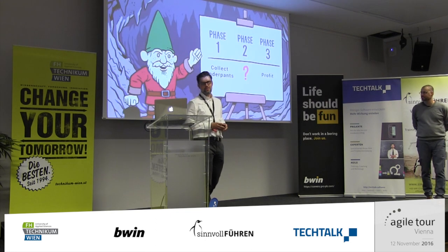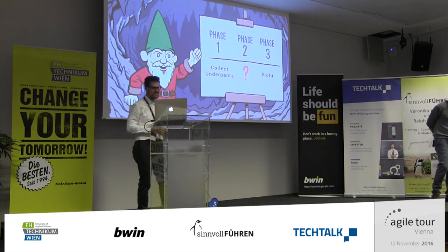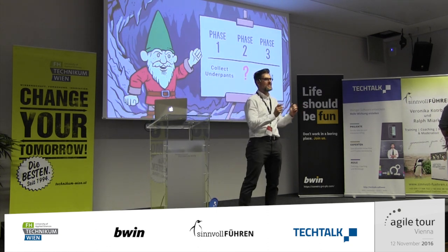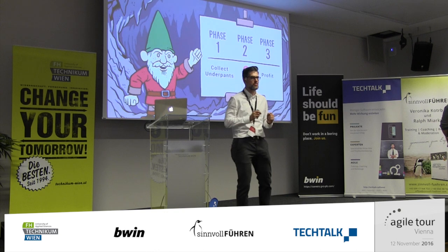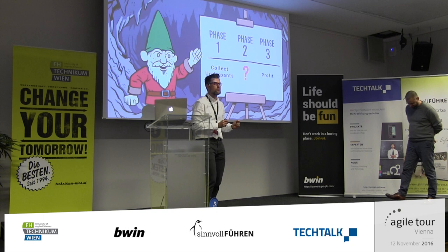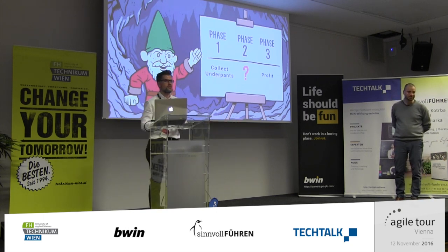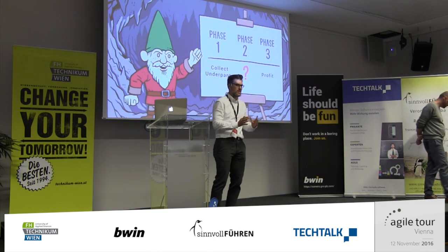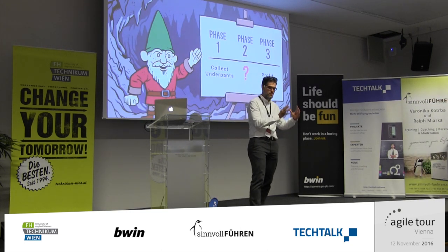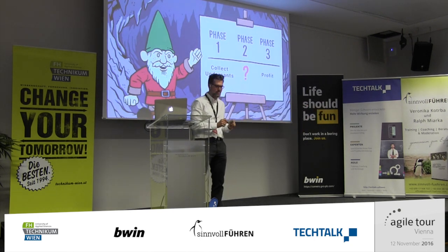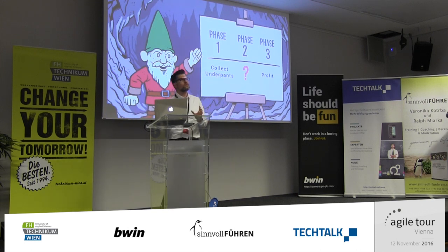So they go next door to the business gnome and he presents them the business plan. Phase one: collect underpants. Did you notice we are very good at collecting underpants? Yeah, we saw that. But what's next? Well, then there is phase two. And then there is phase three: profit. Hold on - what was phase two again? Well, phase one is collecting underpants, it's very important. Phase one, underpants collecting, we are very good at that. But what's phase two? Then there is phase two, and then there is phase three: profit. Sounds familiar?